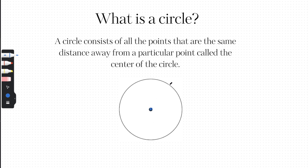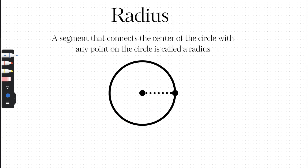Every single point on the circle is the exact same distance away from the center. So let's say from here to here is two inches — that means from here to here would also be two inches, and from here to here would also be two inches. In fact, every single point right on the circle is the exact same distance away from the center.